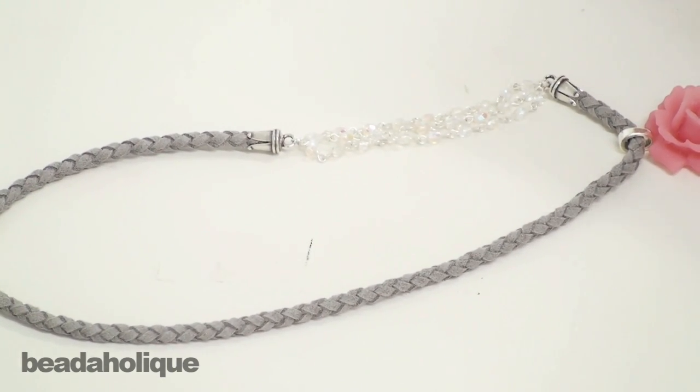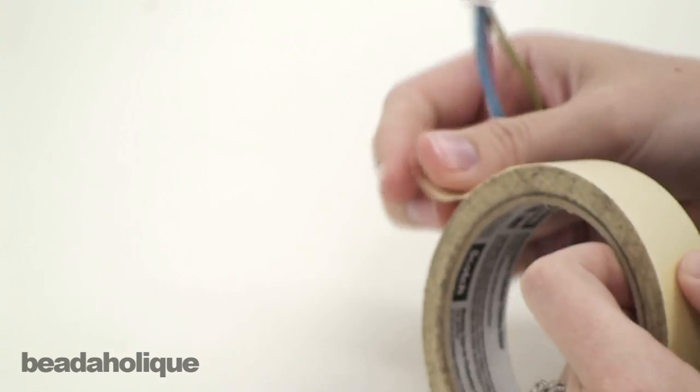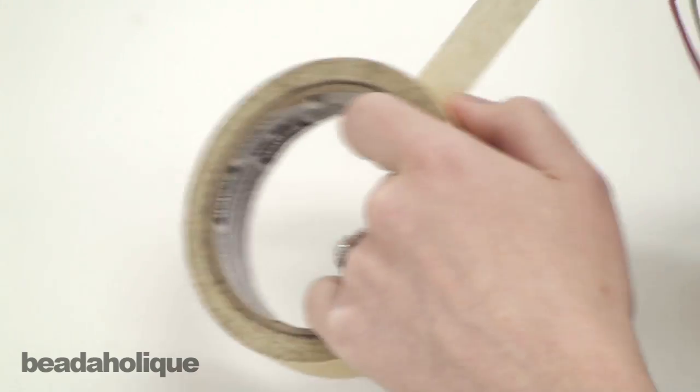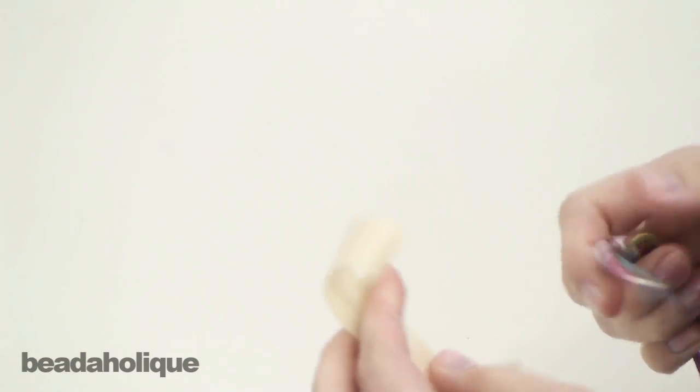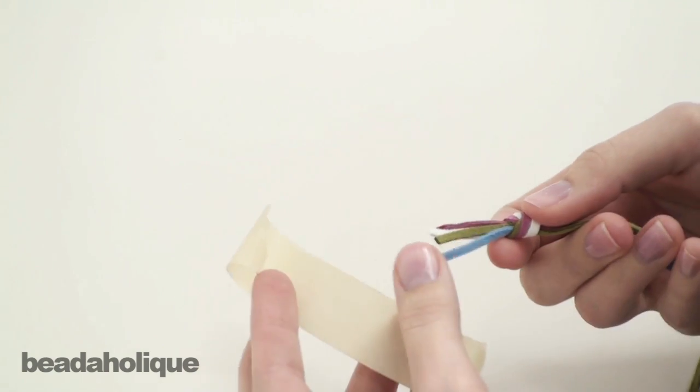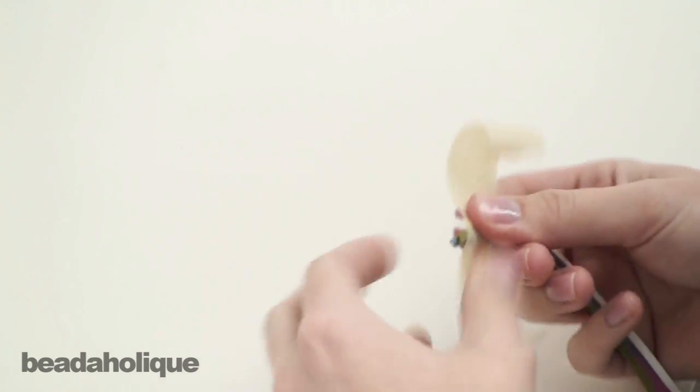Or you can use just two colors, it's up to you. You're going to need a way to secure your cord to your work surface. You can use a safety pin and put it on the leg of your pants like you do with friendship bracelets. You can keep the ends looped if you're using one or two colors and put it on a hook. I'm just going to tape it to my table.